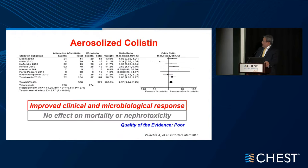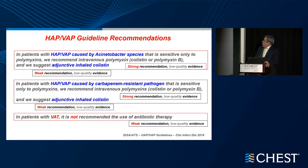Aerosolized colistin has shown, in meta-analysis, improved microbial and clinical response despite no effect on mortality and nephrotoxicity; the quality of evidence is poor. For other organisms such as Acinetobacter and carbapenem-resistant pathogens, the use of intravenous polymyxin IV form was suggested compared to adjunct inhaled colistin.